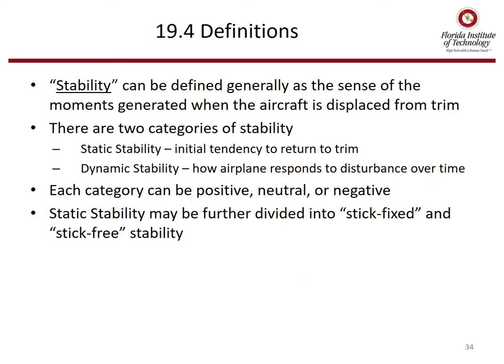Stability can be defined generally as the sense of the moments generated when the aircraft is displaced from trim. There are two categories of stability: static stability and dynamic stability. Static stability is the initial tendency to return to trim. Dynamic stability is how the airplane responds to disturbances over time. Each category can be either positive, neutral, or negative. Static stability can be further divided into stick-fixed and stick-free stability.